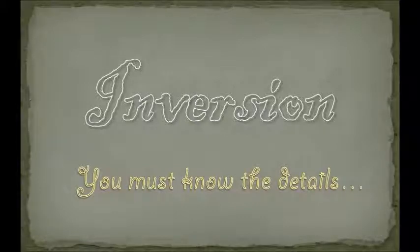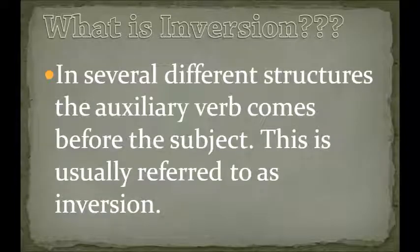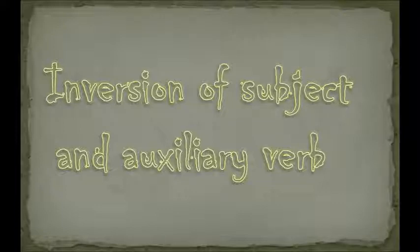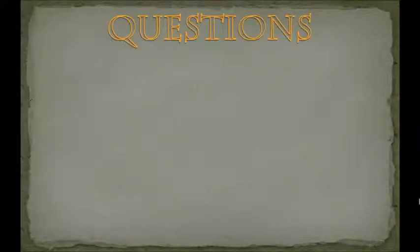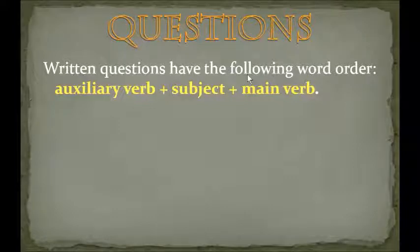Let's start. What is inversion? In several different structures, the auxiliary verb comes before the subject. This is usually referred to as inversion. So here we begin with the inversion of subject and auxiliary verb. Let's learn how to do this — the change of position regarding the subject and auxiliary verb. In written questions, the word order is: auxiliary verb, then subject, then main verb. Note that only the auxiliary verb goes before the subject.